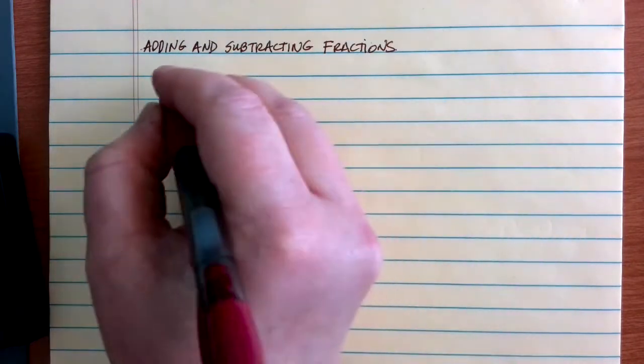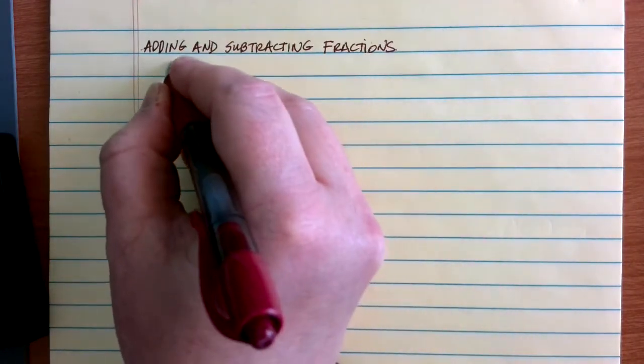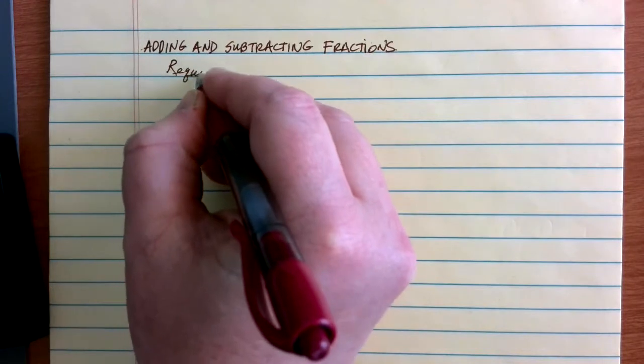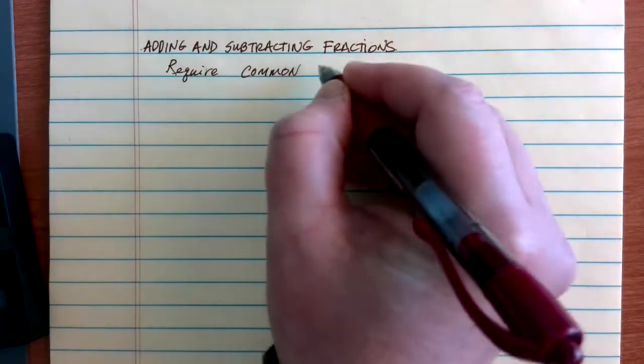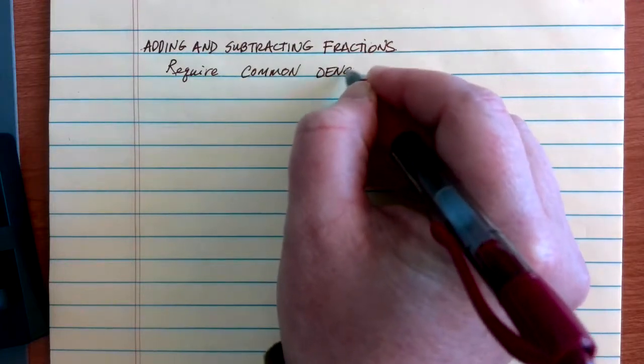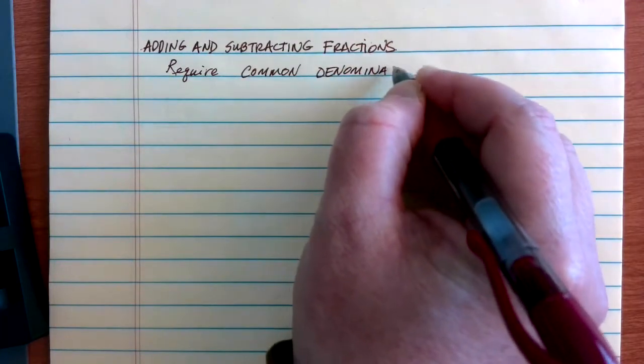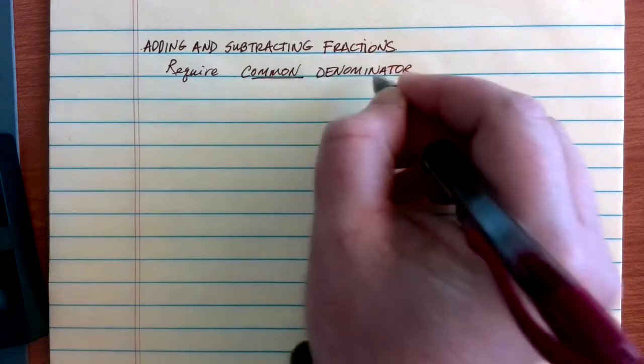But when it comes to adding and subtracting fractions, that's not the case at all. Adding and subtracting fractions require what we call a common denominator. Remember, denominator means the bottom of the fraction, and common means that they have to be the same in order for you to be able to add or subtract the fractions.